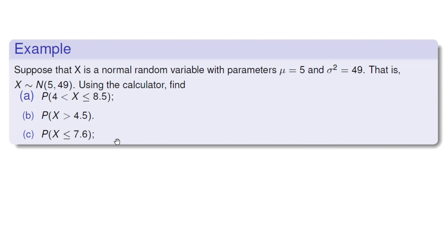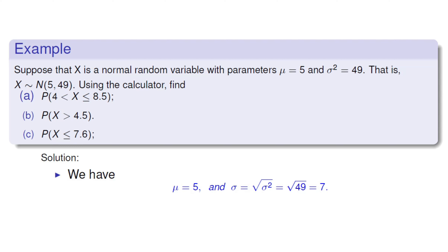Let's consider an example. Suppose X is a normal random variable with parameters mu equals 5 and sigma squared equals 49 — that is, X ~ N(5, 49). Before using the calculator, we find mu equals 5 and sigma equals the square root of sigma squared, which is the square root of 49, giving us 7.